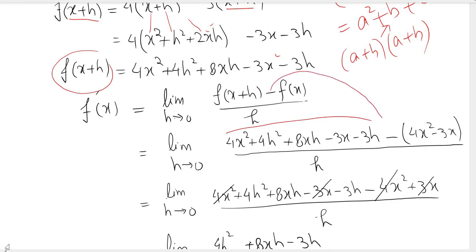There is a negative sign, so we wrote negative, and then we have f(x) which is 4x squared minus 3x. Now it's better that you write this in brackets because there is a negative sign and you might get confused.